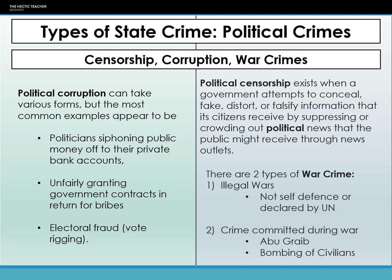Then we get to war crimes, of which there are two types: illegal war — not in self-defence or declared by the UN — and crimes committed during war, such as the Abu Ghraib prison crimes and the bombing of civilians or areas of no strategic purpose. War crimes are more prosecutable than censorship or political corruption because we have the International War Crimes Tribunal in The Hague, which came out of the Nuremberg and Tokyo Trials post-World War II, and a number of war criminals are still awaiting or undergoing trial there.